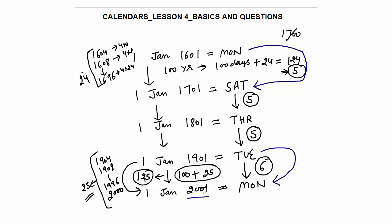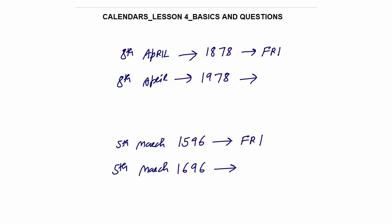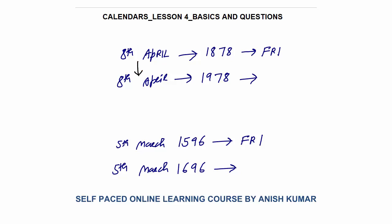Let me take an example. 8th of April 1878 is Friday — what will be the day on 8th of April 1978? This is exactly a 100-year gap without a century leap year, because year 1900 is not a leap year. So there will always be 5 odd days. Friday plus 5: Friday plus 2 is Sunday, Sunday plus 3 is Wednesday. So the answer is Wednesday.